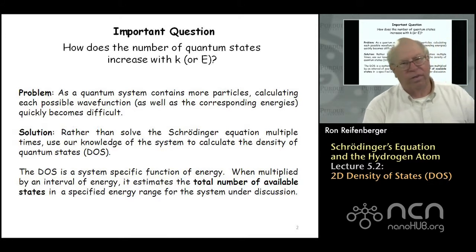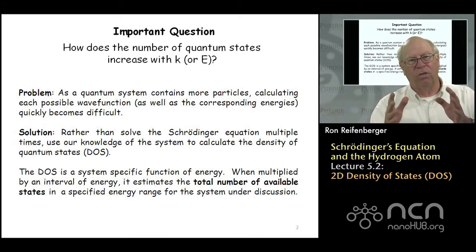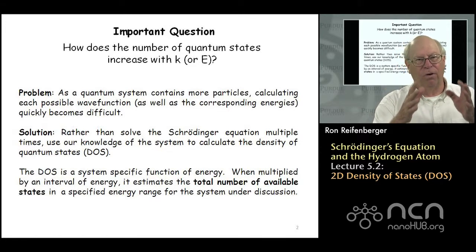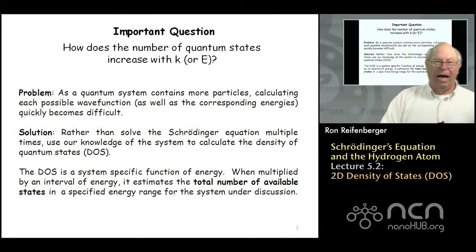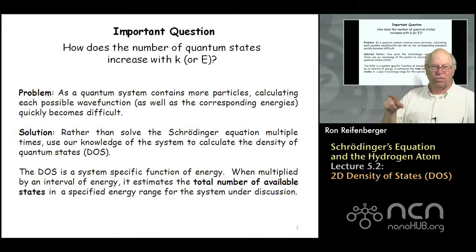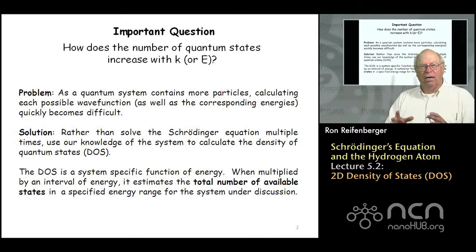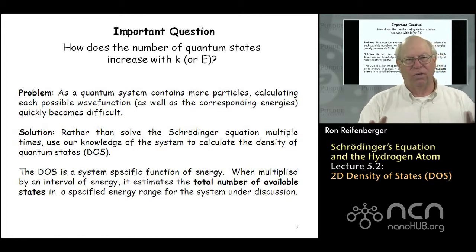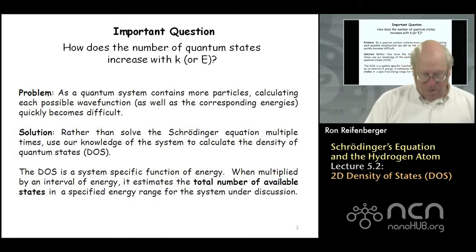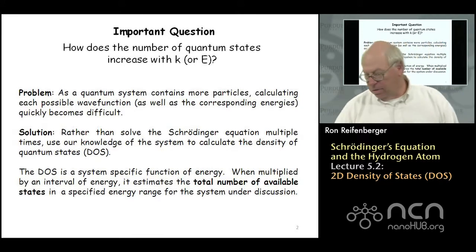The virtue of density of states is: once it's known, you can multiply that density of states by an energy interval delta E, and that tells you the number of quantum states that lie within that energy range delta E. Depending on how complicated the density of states is, you can have very complicated numbers of states as a function of energy. For the two-dimensional potential well, it turns out the density of states is going to be a constant, independent of energy, so the result is very simple. That's the plan for this lecture.